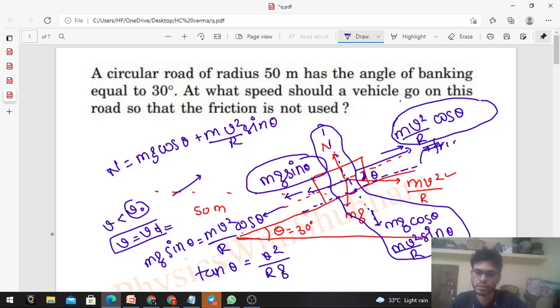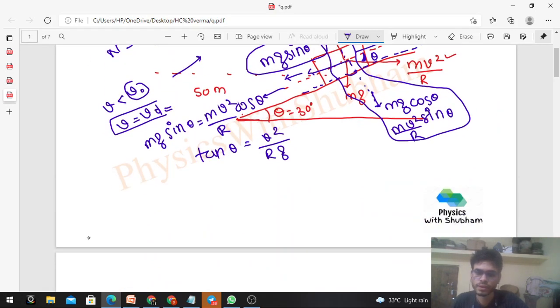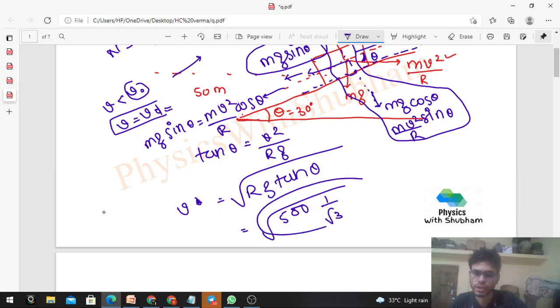We have to find v, so v² is coming out to be rg tan theta. Take the root of this. You can check: radius is given as 50, g's value is approximately 10, so that's 500. What is tan 30? It's 1 by root 3. So calculate the root of this - whatever the value is, that's your answer.